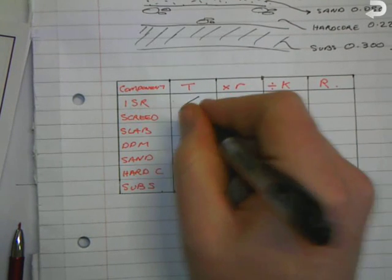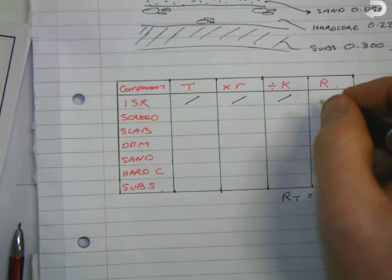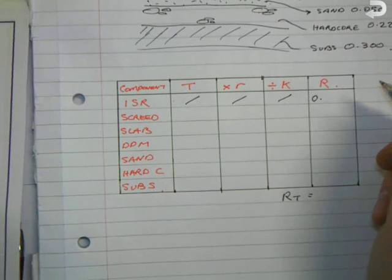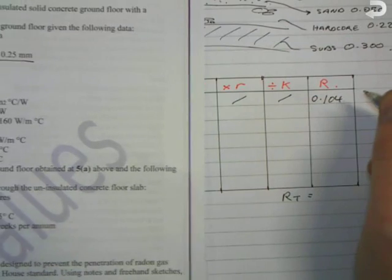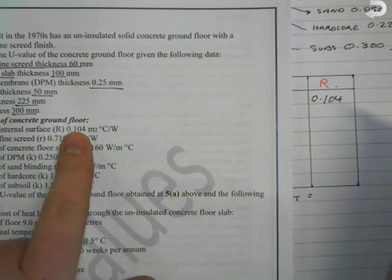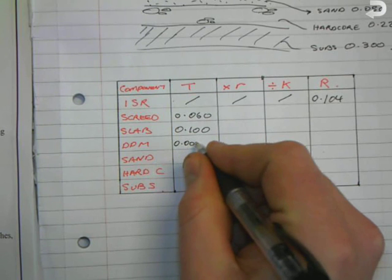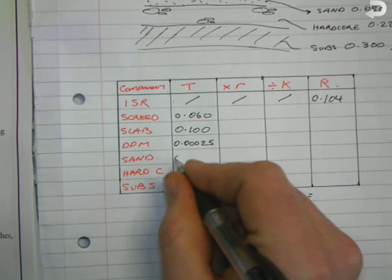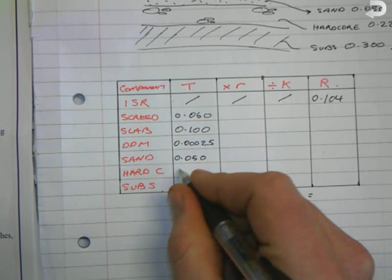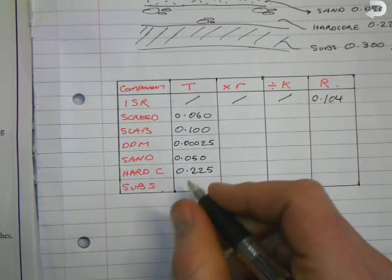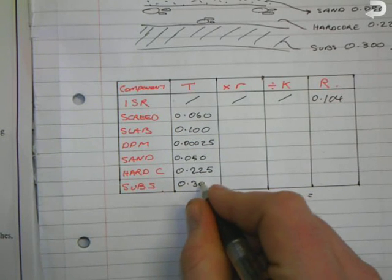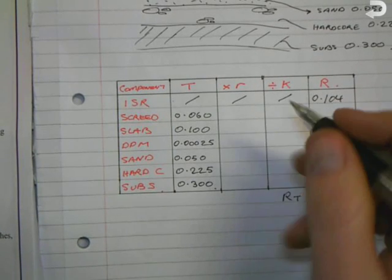To start filling out the table: ISR has no thickness, no resistivity, no conductivity. The resistance given from the table is 0.104. Next, we place in each of our thicknesses: screed 0.060, slab 0.100, DPM 0.00025, sand 0.050, hardcore 0.225, and subsoil 0.300.